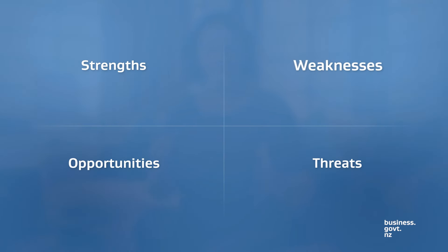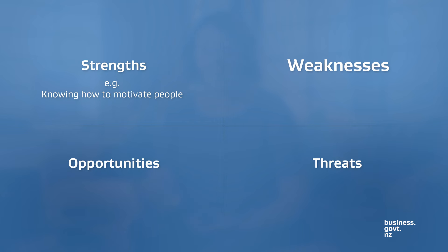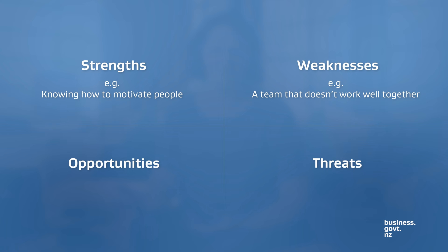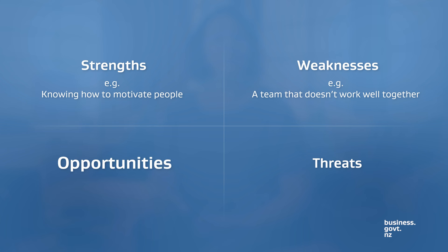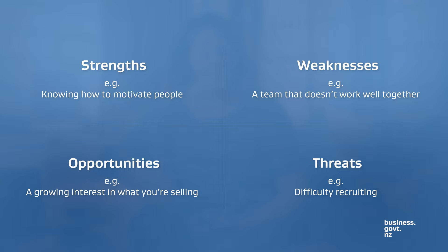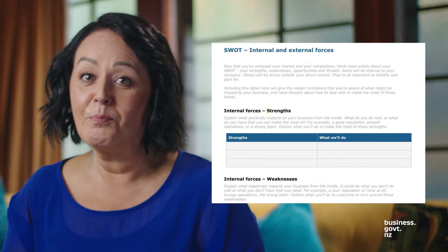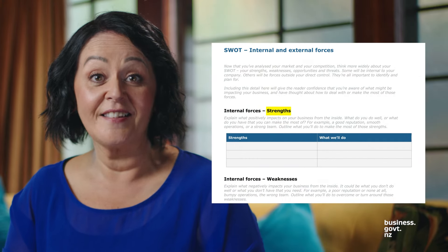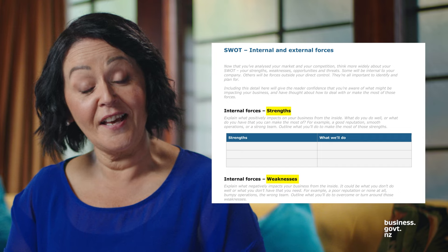Strengths and weaknesses are within your business and within your control. A strength might be knowing how to motivate people. A weakness might be a team that doesn't work well together. Opportunities and threats are external and beyond your control. An opportunity might be a growing interest in what you're selling. A threat might be difficulty recruiting. How will you make the most of your strengths and opportunities and overcome your weaknesses and threats?